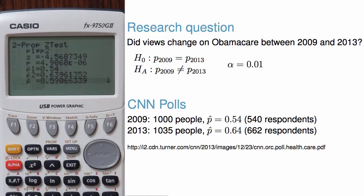Finally, hitting execute will run the numbers. We can see that the alternative hypothesis was two-sided, as we had specified.